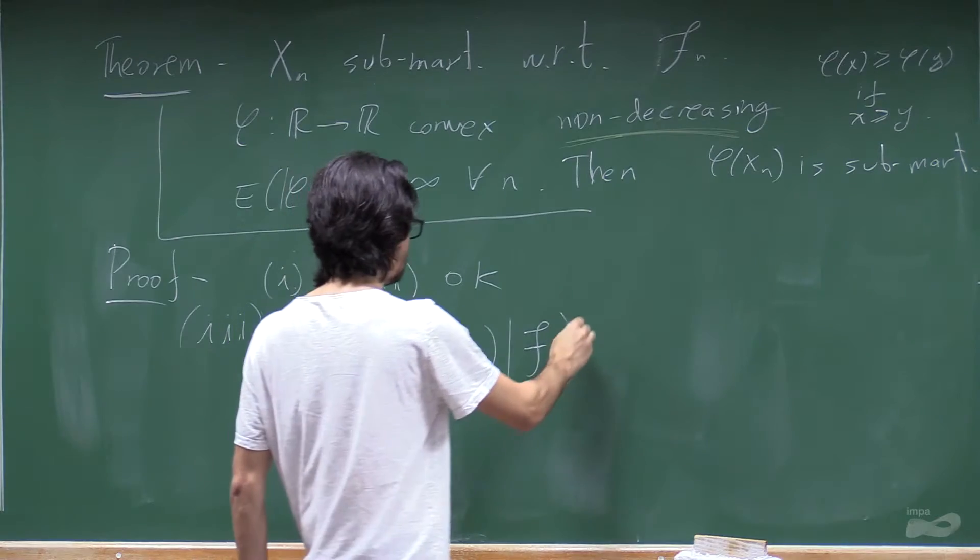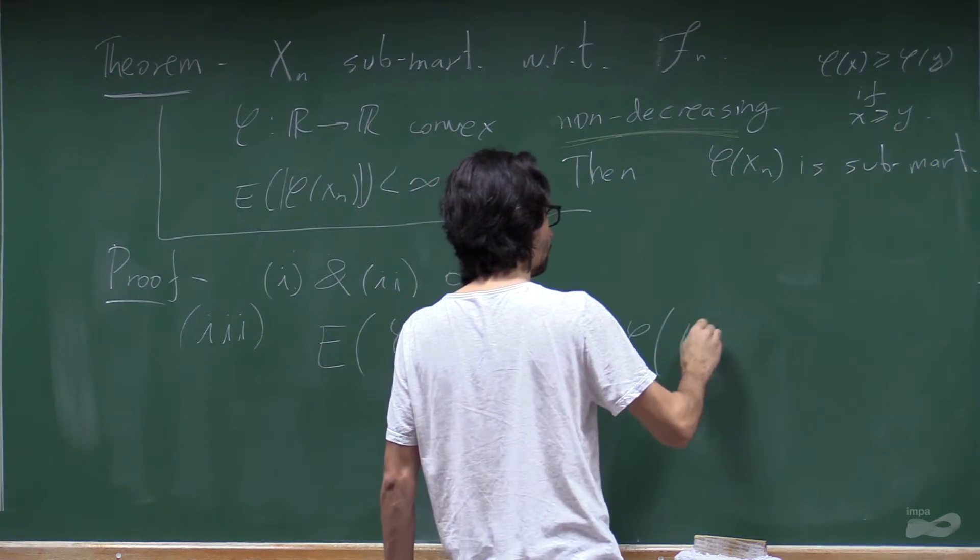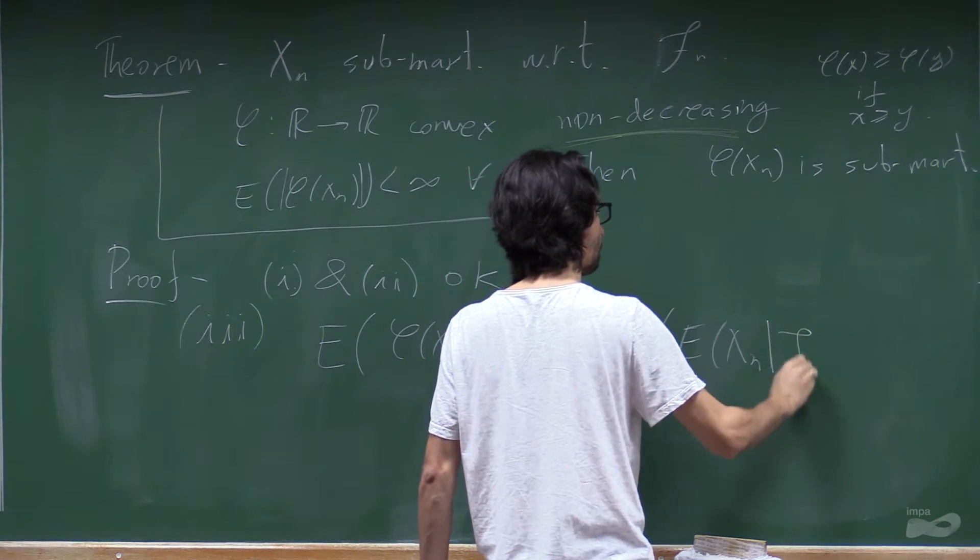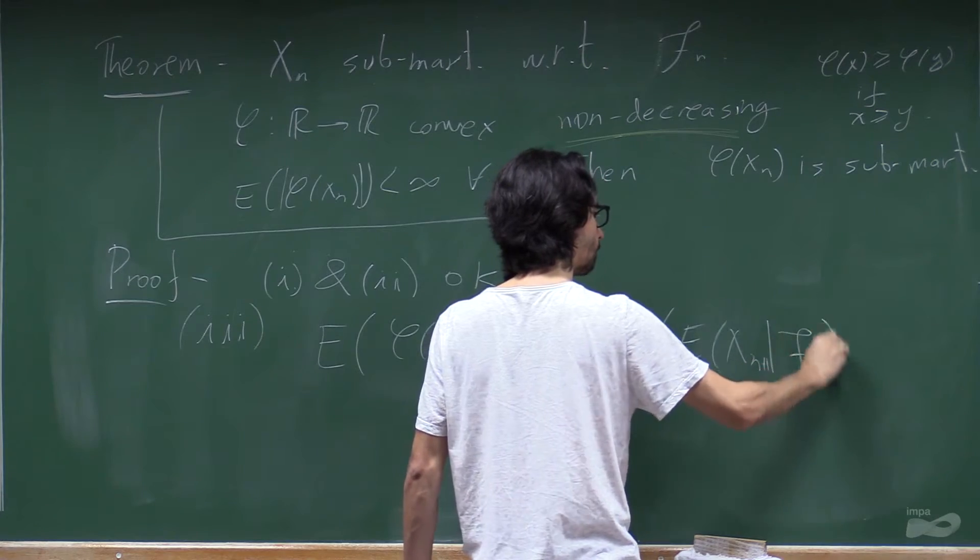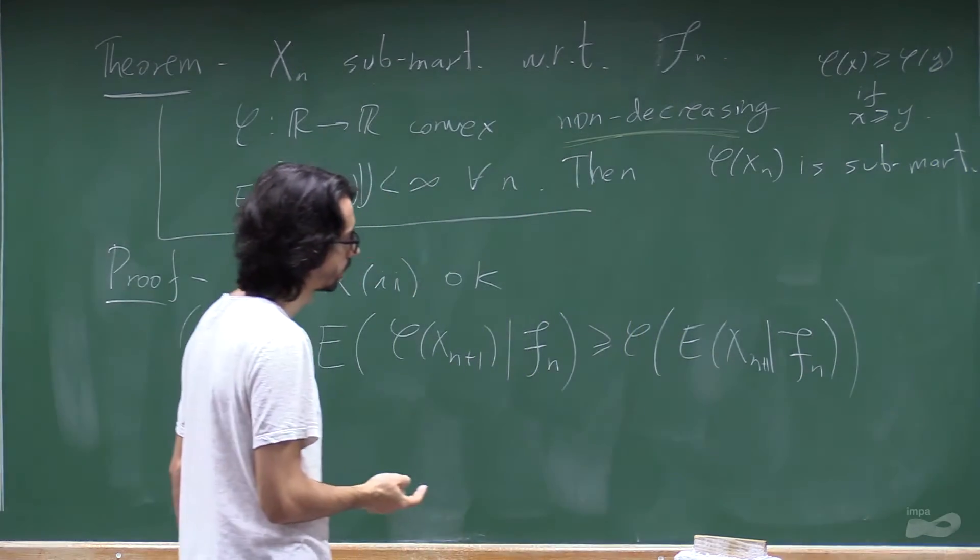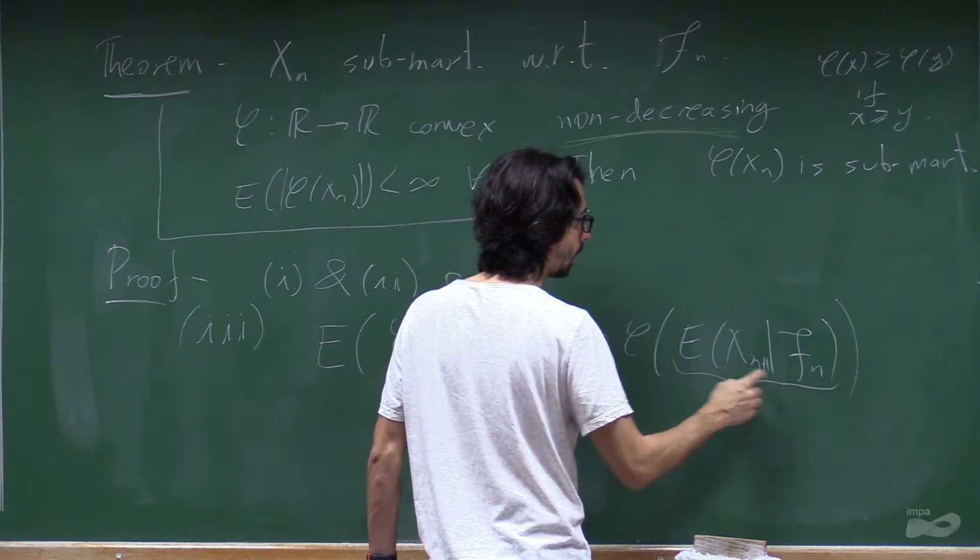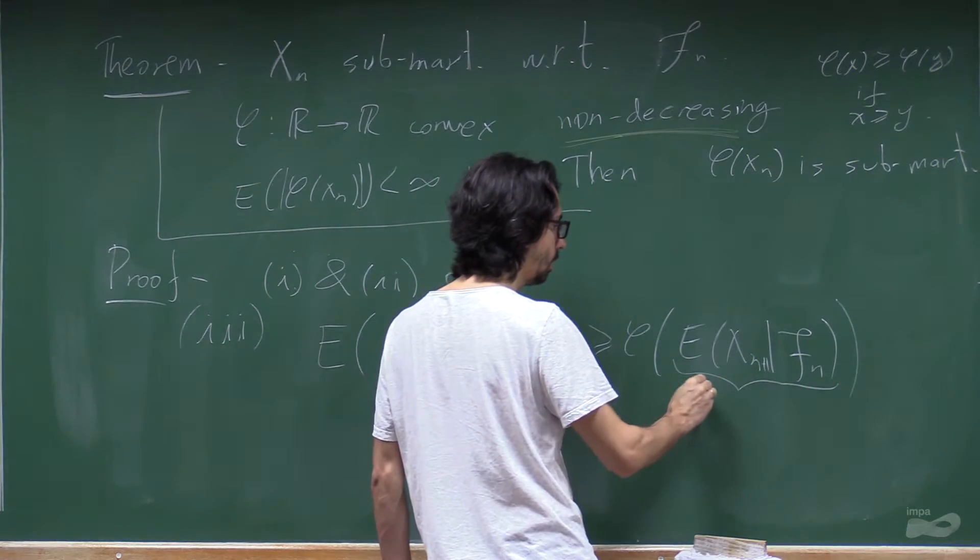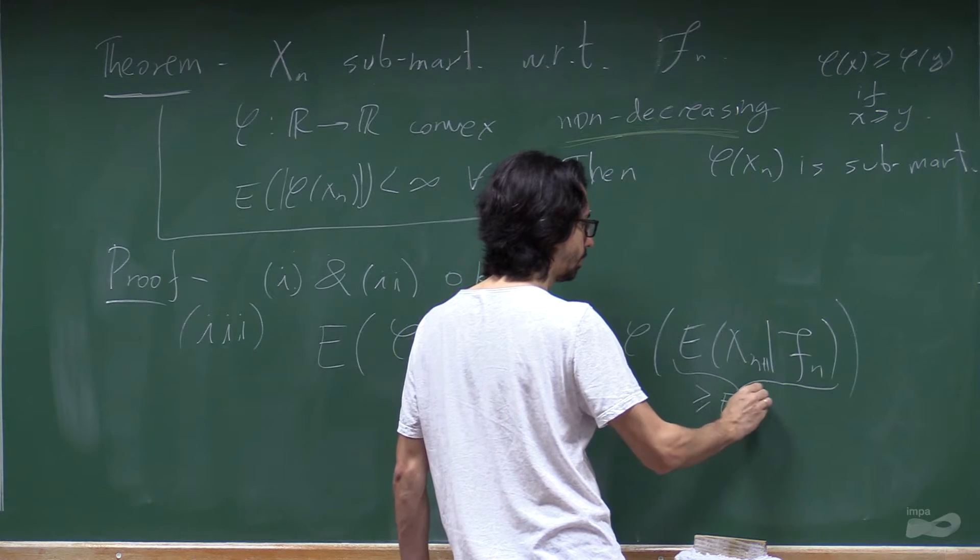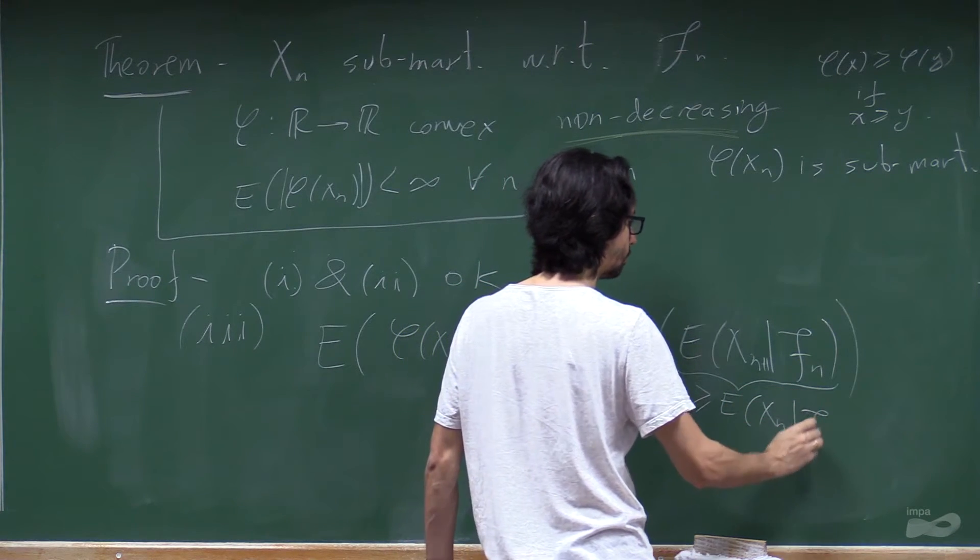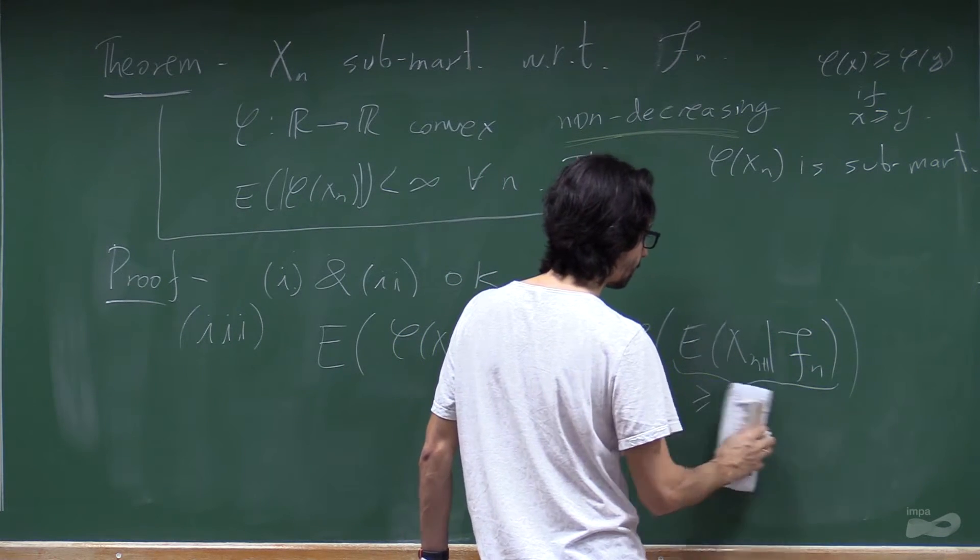We can again use Jensen. And what is inside here, because this is a sub-martingale, is bigger or equal than the expectation of xn given f. Sorry. It's bigger or equal than xn.